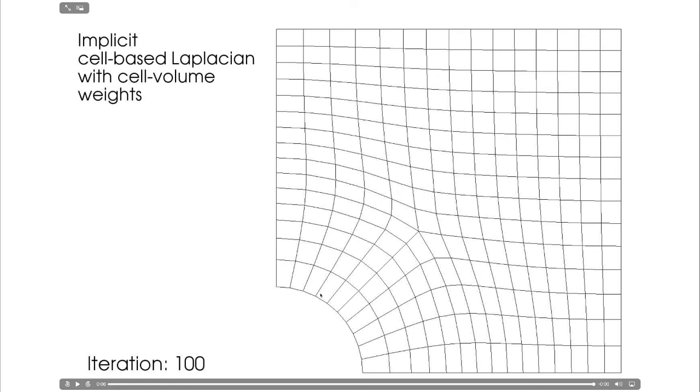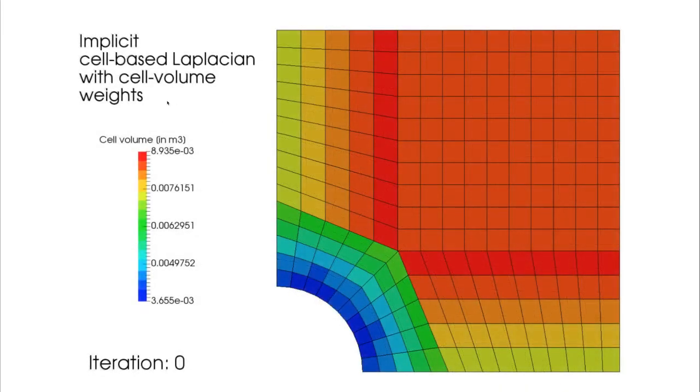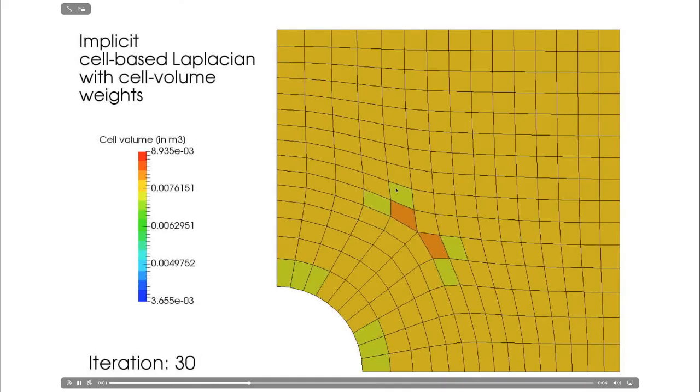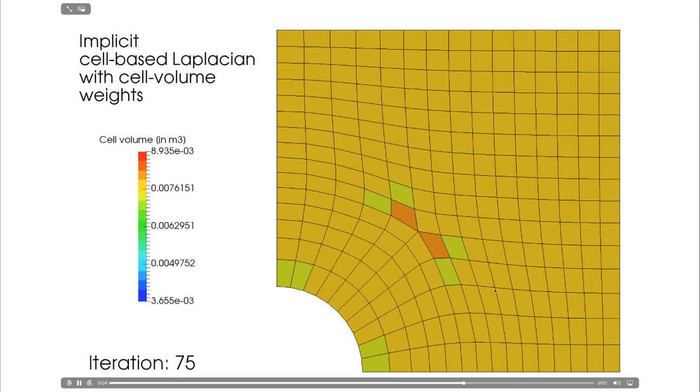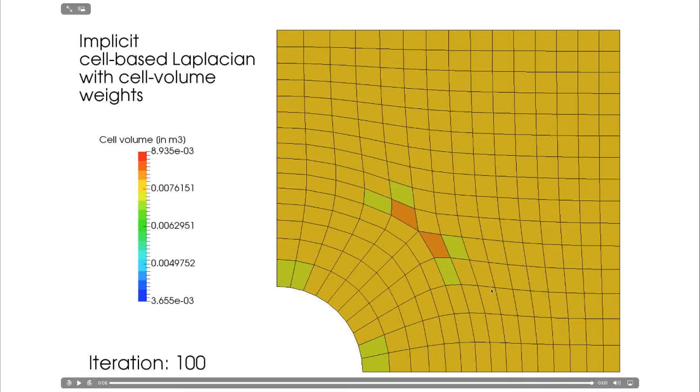You can see here some of the cells near the central hole seem a bit elongated. But if we look at the cell volumes, this is the initial cell volume field. We have small volumes here in meters cubed. And then the cells out here are about three times as large. So when we run the smoother, you can see it straight away almost makes all the volumes the same. All the cells the same volume. So it is doing what it's meant to do. The method seems to work okay.